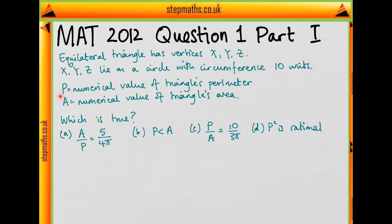They've called p the numerical value of the triangle's perimeter. So if our triangle had side lengths 1, 1, 1, then p would be equal to 3. Similarly, a is the numerical value of the triangle's area. And they want to know which of these statements is true.